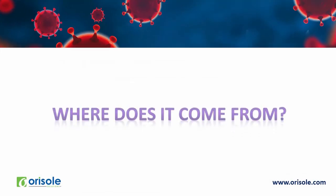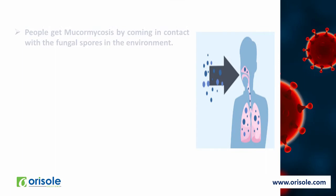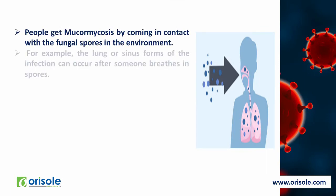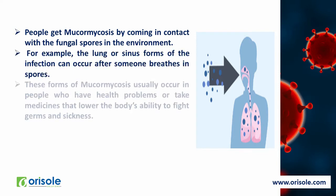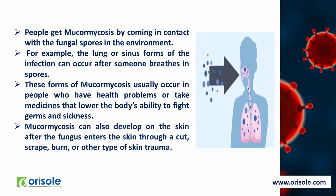Where does it come from? People get mucormycosis by coming in contact with fungal spores in the environment. For example, the lung or sinus form of the infection can occur after someone breathes in spores. These forms of mucormycosis usually occur in people who have health problems or take medicines that lower the body's ability to fight germs and sickness. Mucormycosis can also develop on the skin after the fungus enters the skin through a cut, scrape, burn or other type of skin trauma.